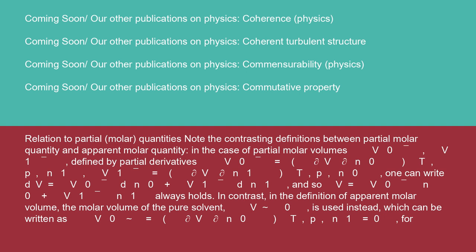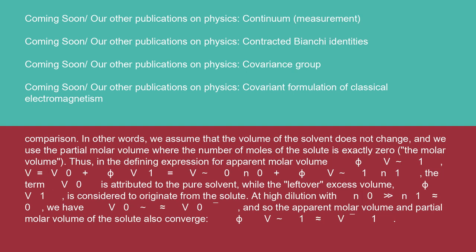In contrast, in the definition of apparent molar volume, the molar volume of the pure solvent V⁰ is used instead, which can be written as V⁰ = (∂V/∂N₀)_{T,P,N₁=0}. In other words, we assume that the volume of the solvent does not change, and we use the partial molar volume where the number of moles of the solute is exactly 0 — the molar volume.